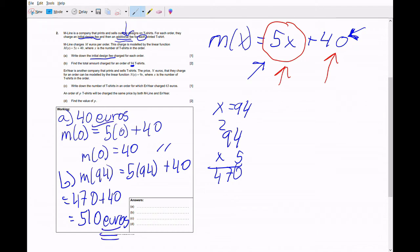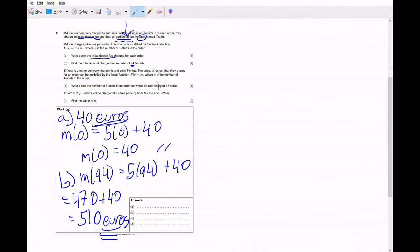Now for part C, they tell us that N year is another company that prints and sells t-shirts. The price in euros that they charge for an order can be modeled by the linear function n(x) equals 9x, where x is the number of t-shirts in order. So part C tells us to write down the number of t-shirts in an order for which N year charged 63 euros.